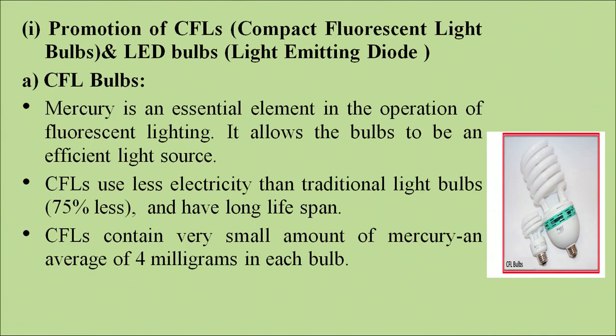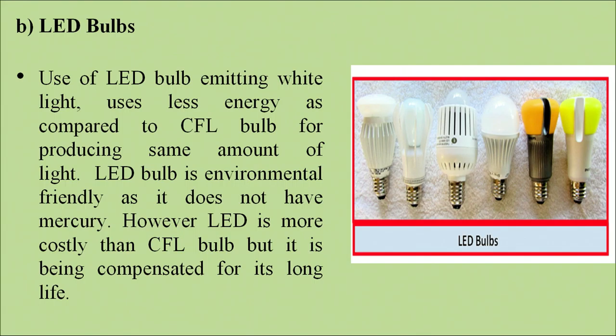Promotion of CFLs and LED bulbs for lighting. CFL is the compact fluorescent light, which contains mercury as an essential component for fluorescent lighting. It allows the bulb to be an efficient light source, using much lower amounts of electricity and having a long lifespan. LEDs on the other hand are safer in comparison to CFLs — there is no mercury in the bulbs and most LEDs have a longer lifetime, though they are costlier, which is compensated by their long life.